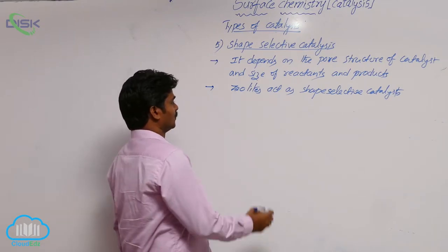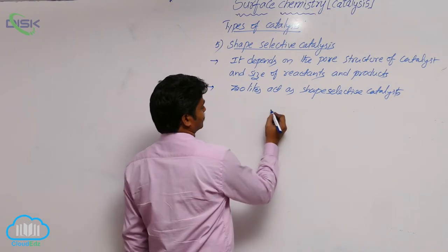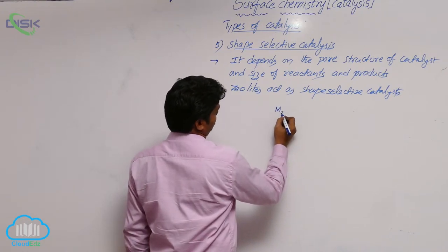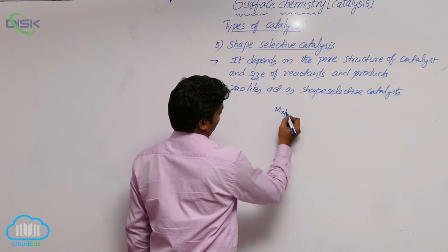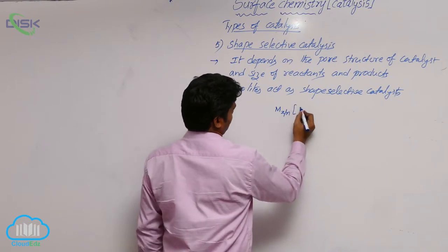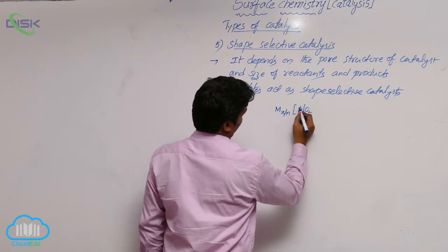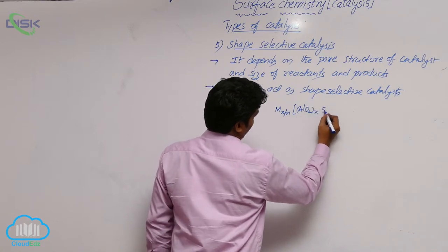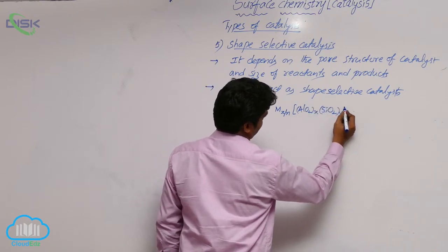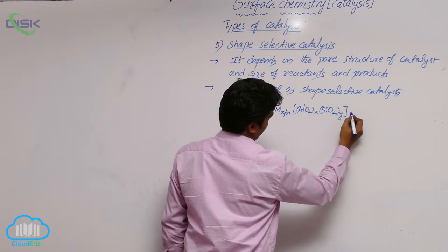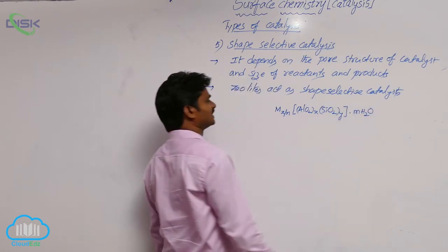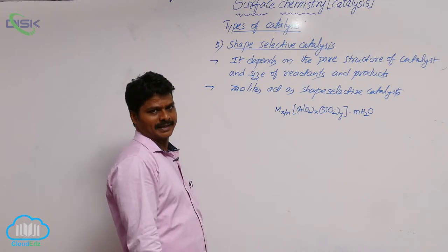Do you know the formula of zeolites? The zeolite formula is: M(x/n) [AlO2]x [SiO2]y · mH2O. This is the general formula of zeolites.